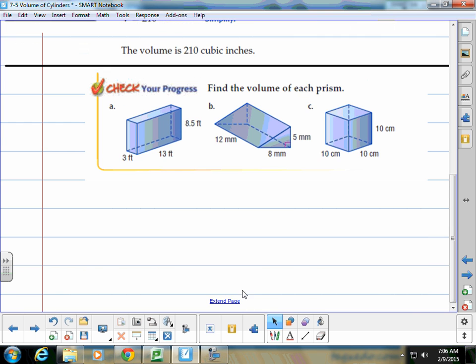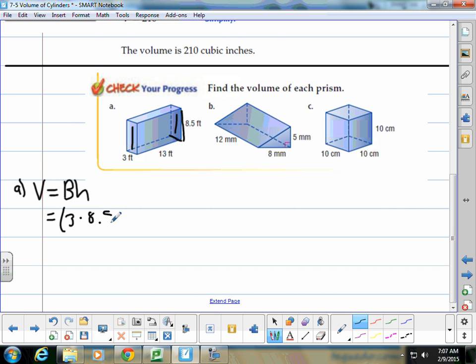Here are a couple for you to try. For A, you're going to use volume equals area of the base times the height. You have to realize that your base is going to be this side and this side. So notice it has a 3 by 8½. So we're actually going to do 3 feet times 8½ multiplied by a height of 13. Work that out and make sure you label correctly.